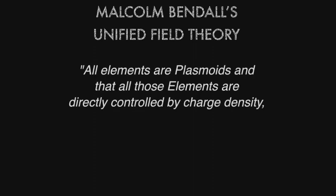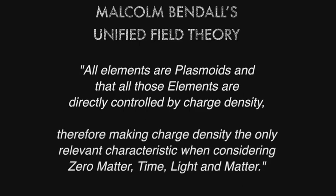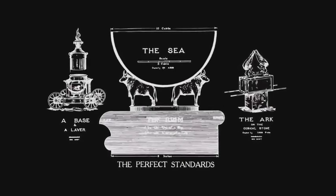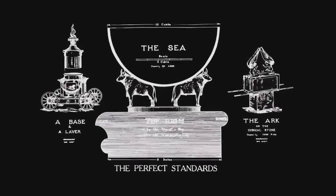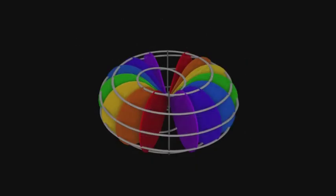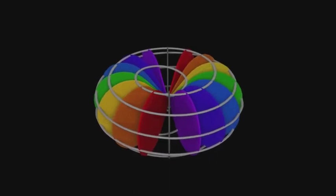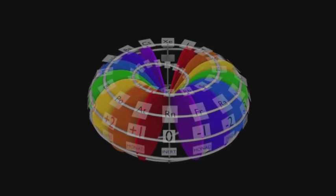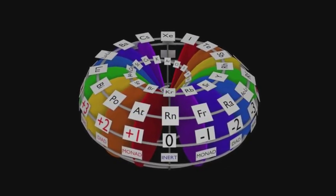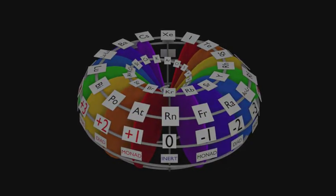The underlying principle of Malcolm Bendel's unified field theory is that all elements are plasmoids, and that all those elements are directly controlled by charge density, therefore making charge density the only relevant characteristic when considering zero matter, time, light and matter. The implosive vortex waveguide is inspired by the molten sea Vajra based on Malcolm Bendel's scientific observations drawn from his Bendel torus. This led to his unified field theory which is clearly illustrated by his model of the elements and his octave dimensional model.